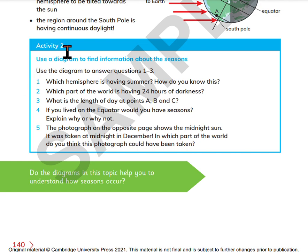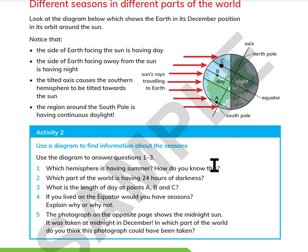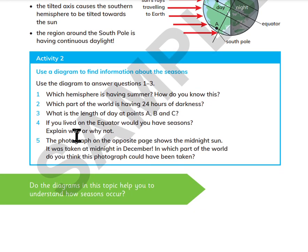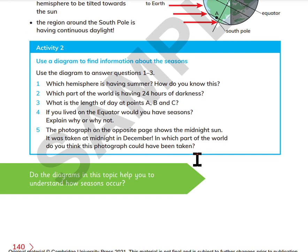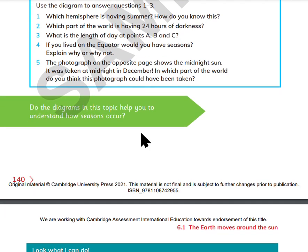Activity 2: Use a diagram to find information about the seasons and answer questions 1 to 3. Which hemisphere is having summer? How do you know? Which part of the world is having 24 hours of darkness? What is the length of day at points A, B, and C? If you lived on the equator, would you have seasons? Explain why or why not. The photograph on the opposite page shows the midnight Sun, taken at midnight in December. In which part of the world do you think this photograph could have been taken? Do the diagrams in this topic help you to understand how seasons occur?